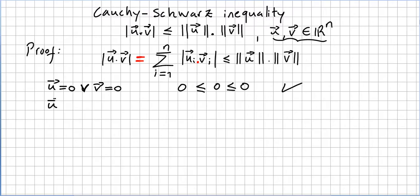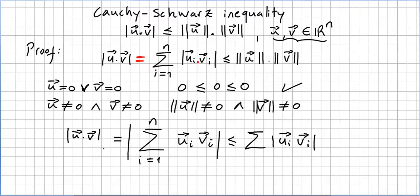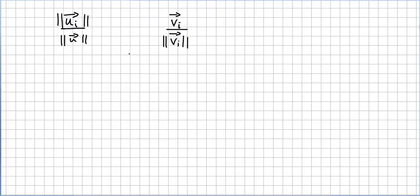We only need to consider the cases where u is not zero and v is not zero. If u is not zero and v is not zero, it means the norm of u is not zero and the norm of v is not zero. We need to prove that the absolute value of the inner product u·v is less than or equal to the sum of absolute values. To avoid heavy notation, I am going to normalize these vectors.